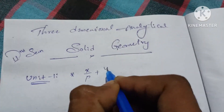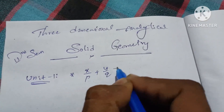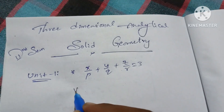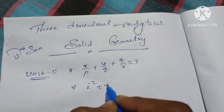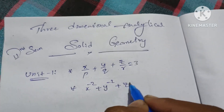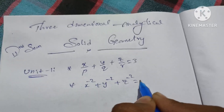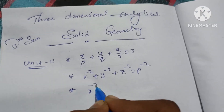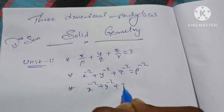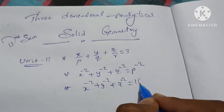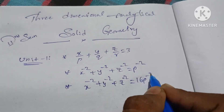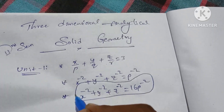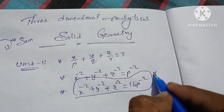Note this question: x/p + y/q + z/r = 3. This is a most frequently asked examination question. In second semester, this question carries 10 marks.